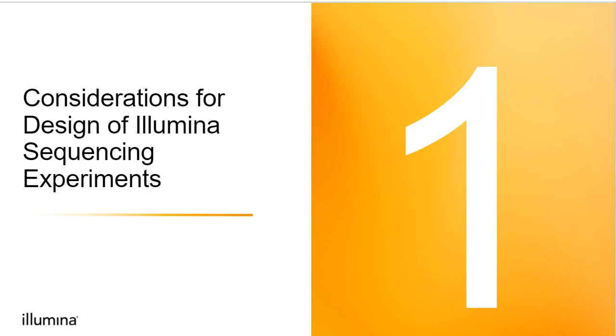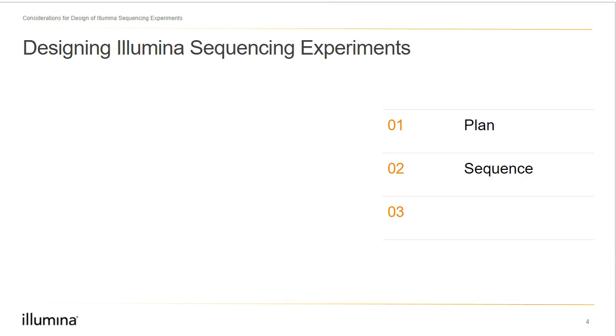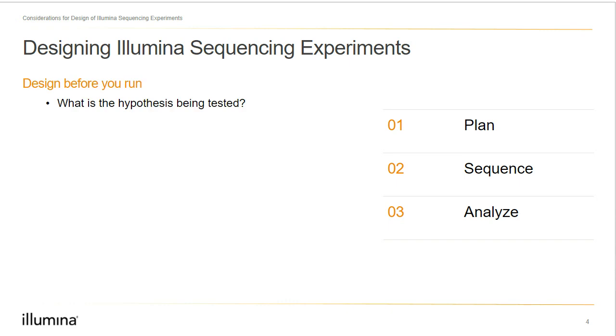Let's talk about experimental design. A well-thought-out experiment can really help you downstream, and even before going into the lab and preparing samples, you should know what analysis approach and software you'll be using. At a primary level, every Illumina sequencing experiment consists of three steps: planning our experiment, conducting the actual sequencing experiment, and finally the fun part — data analysis. When designing an experiment, how exactly are you defining the hypothesis to be tested? This is really important because the answer will change every downstream step and drive our overall planning.